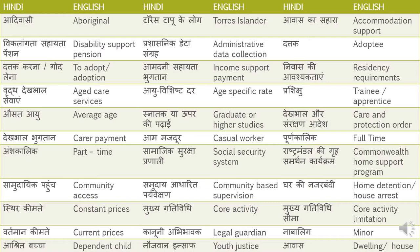Torres Islander — Torres Tapu ke log — the person who lives on that particular island. Awas ka sahara — that is Accommodation Support. In Australia you also get something called accommodation support, so when you get this word in your dialogue you have to use the translation as Awas ka sahara.